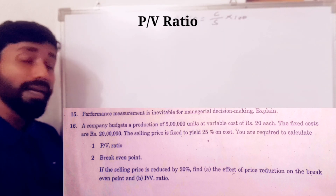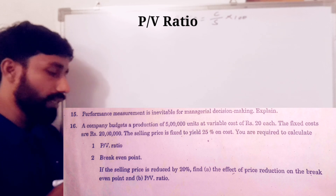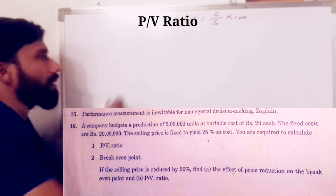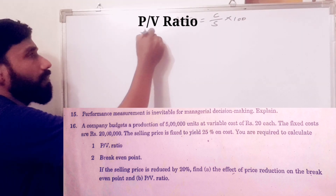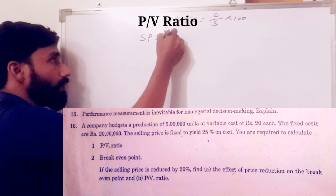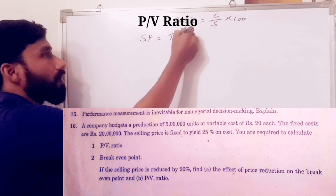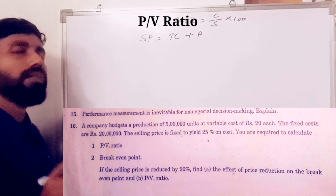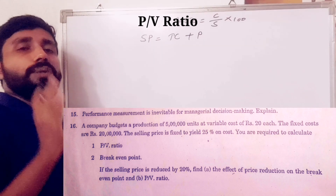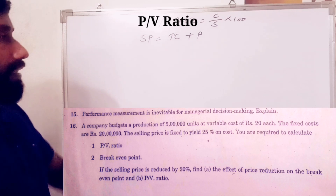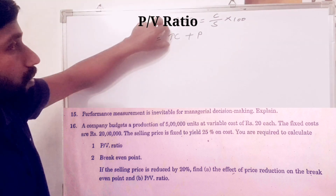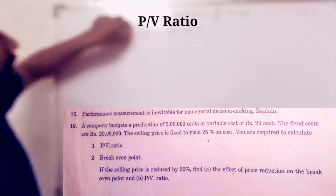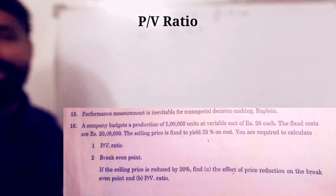The selling price is fixed based on cost. The selling price is equal to total cost plus profit. Normally, a business organization fixes the selling price this way.